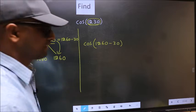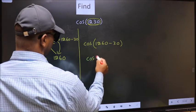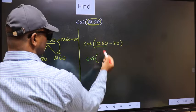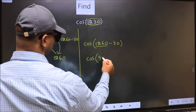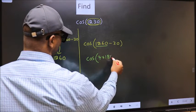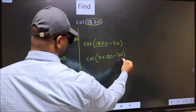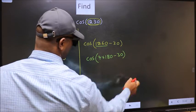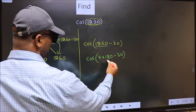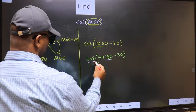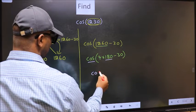Next, cos. Now in place of this, we should write 7 times 180 minus 30. Next, here we have 180, so cos is not going to change. It will remain cos.